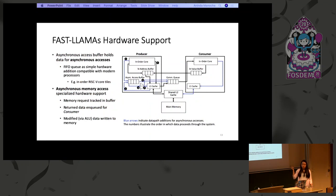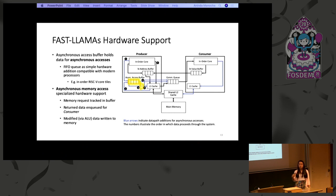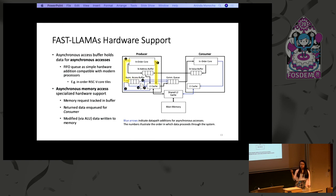I'm going to go over the main hardware additions that FastLLAMAs uses. We have a specialized buffer called the asynchronous access buffer. When the producer issues a memory access, this buffer stores the addresses of the in-flight memory requests. When the data comes back from the memory hierarchy, it is matched with its corresponding address and then passed to the communication queue between the producer and consumer cores. When we have an asynchronous memory access, it is issued by the producer, sent to the memory hierarchy, its address is tracked, and when the data comes back — sometimes modified — it can be sent directly to the memory hierarchy or onto the communication queue.